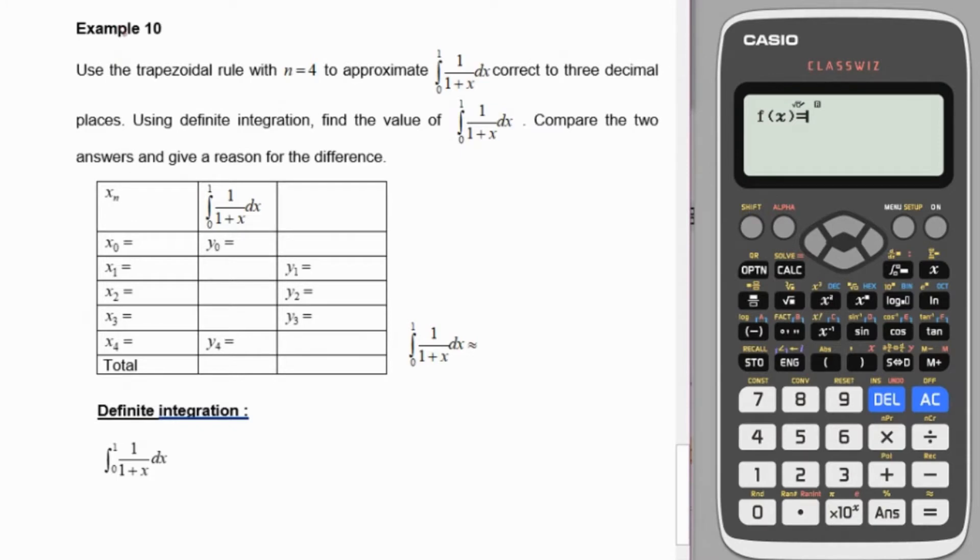Hi everyone, for example 10, use the trapezoidal rule with n equals 4 to approximate the integration from 0 to 1 for 1 over 1 plus x with respect to x, correct to 3 decimal places. Using definite integration, find the value of this integration and compare these two answers and give a reason for the difference.